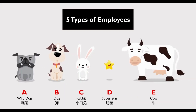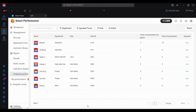We will also explain five types of employees: wild dog — great capabilities and achieves KPI but low in value assessment, and you cannot retain this type in your company. There are also dog, rabbit, superstar, and cow types. Once you sign our package, we will conduct training to help you understand which category each employee falls under.